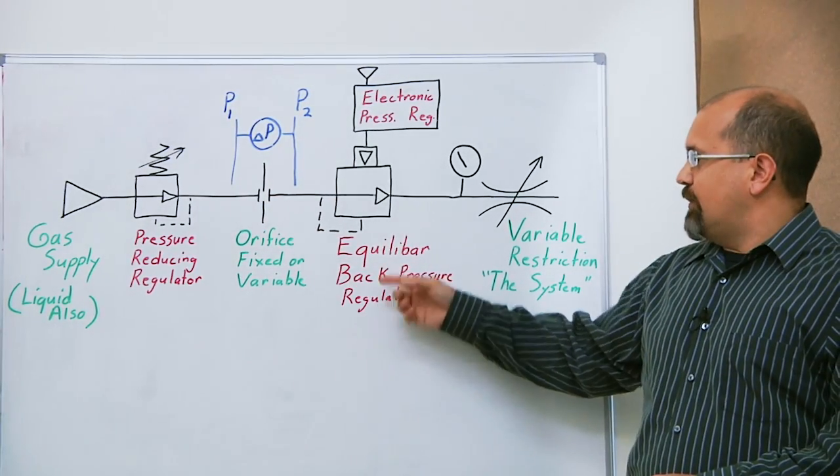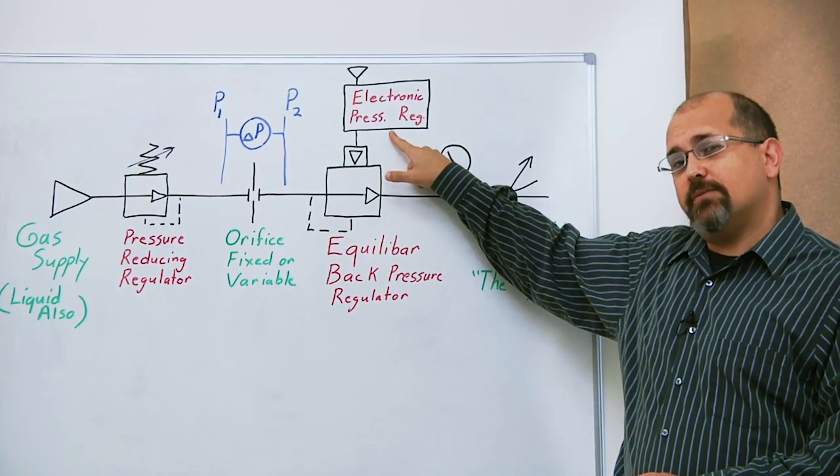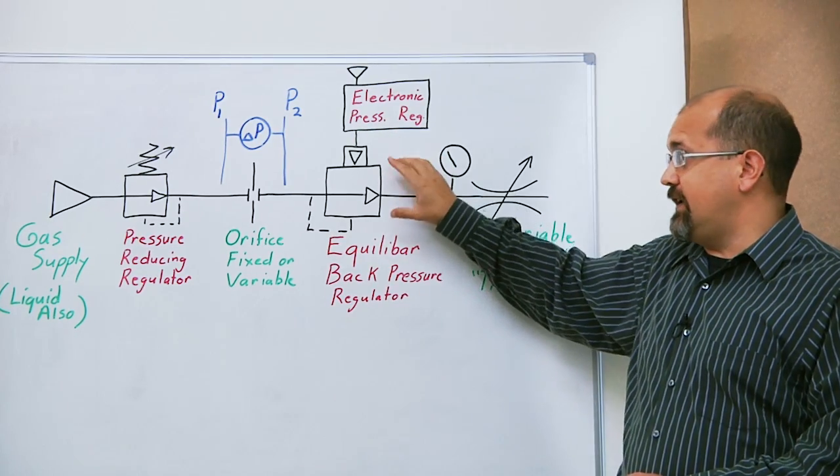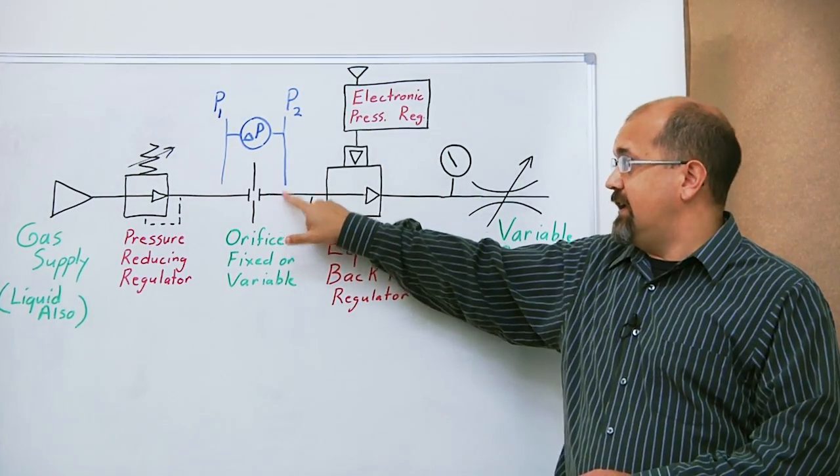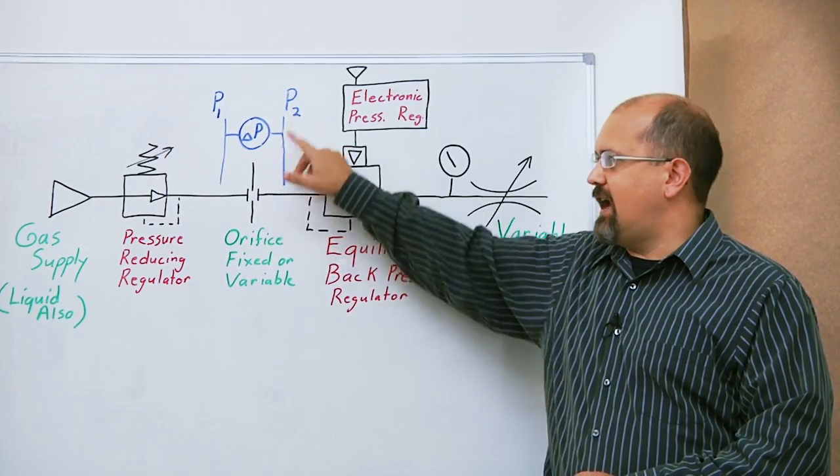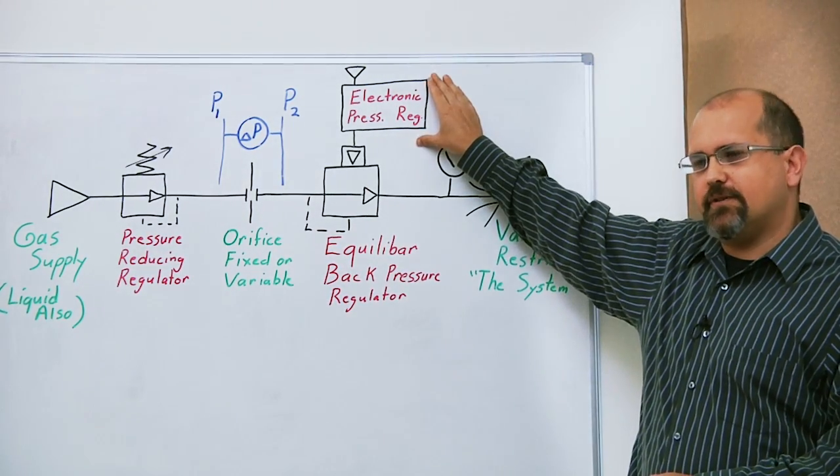The Equilibar regulator is pilot operated by an electronic pressure regulator. This electronic pressure regulator lets me vary the command setpoint to the Equilibar and therefore vary the P2. By varying P2, I can control the differential pressure across the orifice using the electronic pressure regulator.